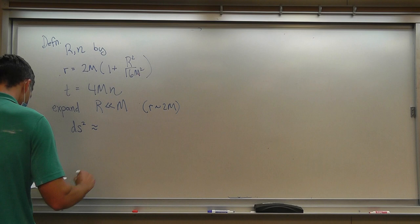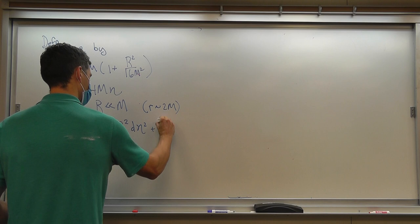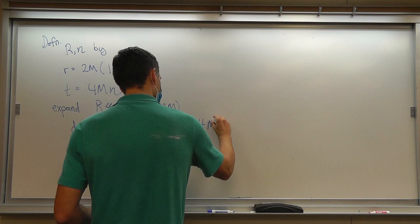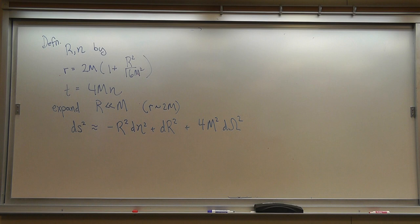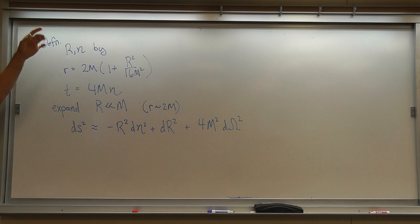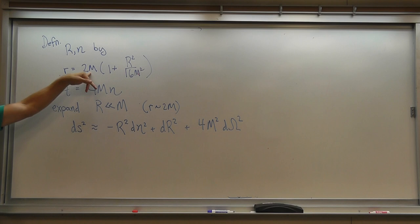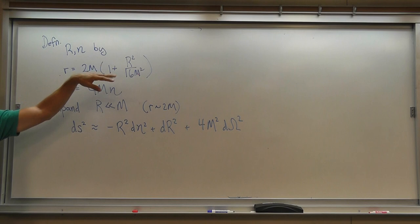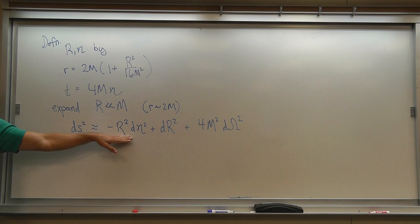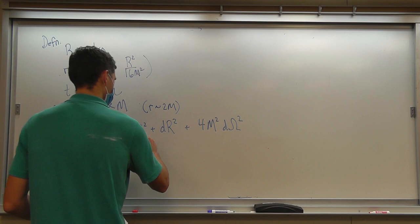What we're going to do is zoom in on the horizon and use our results of Rindler space, where we showed that in order to have a smooth Euclidean manifold, there had to be an imaginary time periodicity for the point at the center to be smooth. To zoom in on the horizon, we define coordinates R and eta by the coordinate change: r equals 2m times (1 plus R squared over 16m squared), t equals 4m eta, then we expand for big R much less than m. This is a near-horizon expansion, and if you plug that into the metric, what you find is that the metric is minus R squared d eta squared plus dR squared plus 4m squared d omega squared.